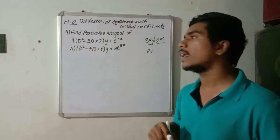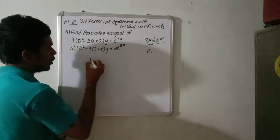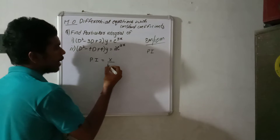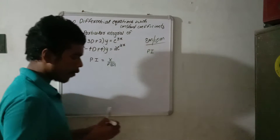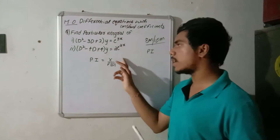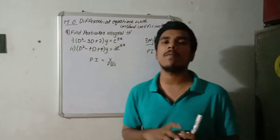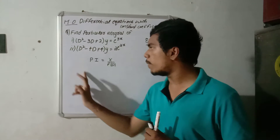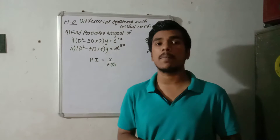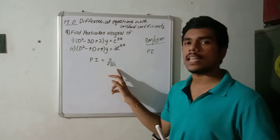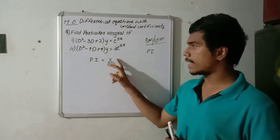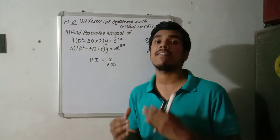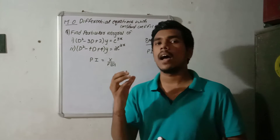Particular integral PI is equal to X(D) divided by f(D), where f(D) is the form of the differential equation with constant coefficients. We will solve this particular integral for different cases. If X(D) is a function of x, we will solve different cases and different methods.